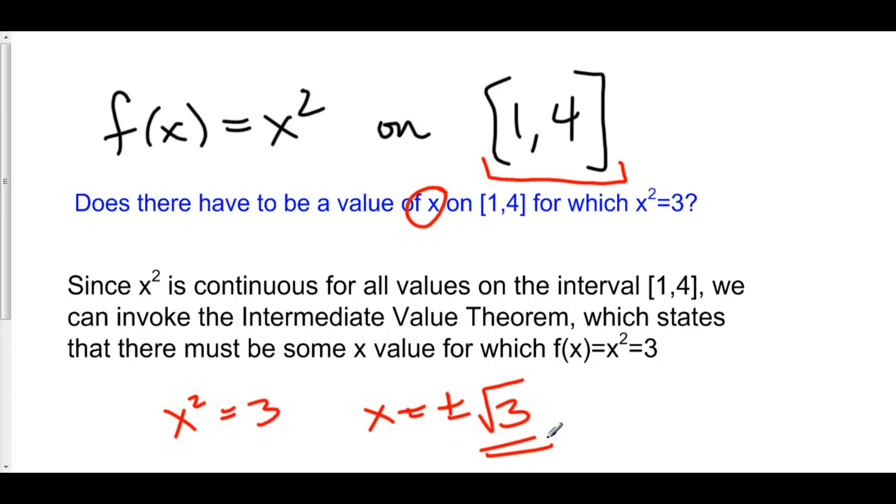So we have checked this, but we didn't have to do that because the intermediate value theorem says that this is always going to be true.